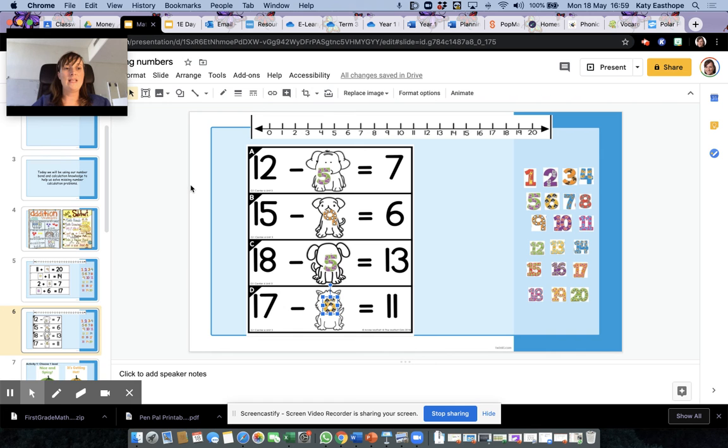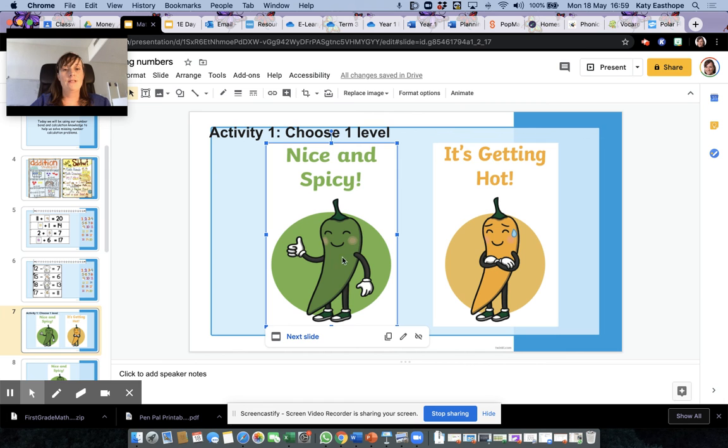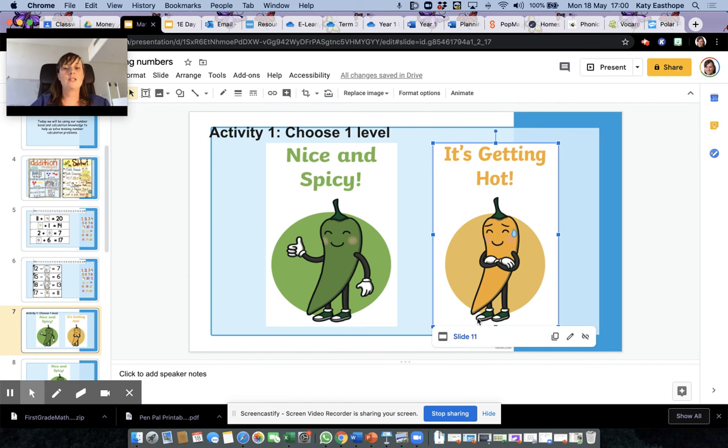There's lots of different ways that we can solve addition and subtraction missing number problems. So today you're going to have two parts to do. Activity one, you can choose a level - you only have to do one. You choose green or you choose orange. If you want green, click on the picture next slide. If you want orange, click on the picture, click slide 11 and it will take you straight there.